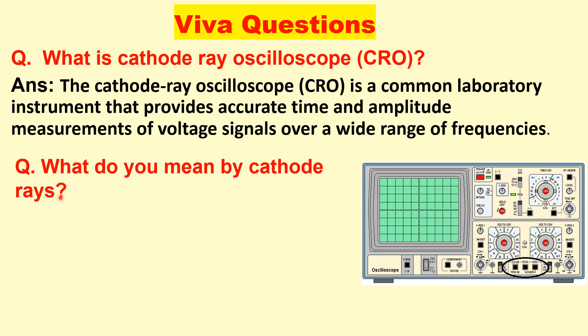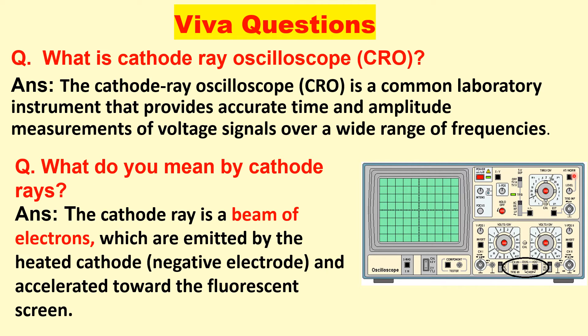And what do you mean by the cathode rays? The cathode rays are beam of electrons which are emitted by the heated cathode. Cathode is a negative electrode and they are accelerated towards the fluorescent screen.